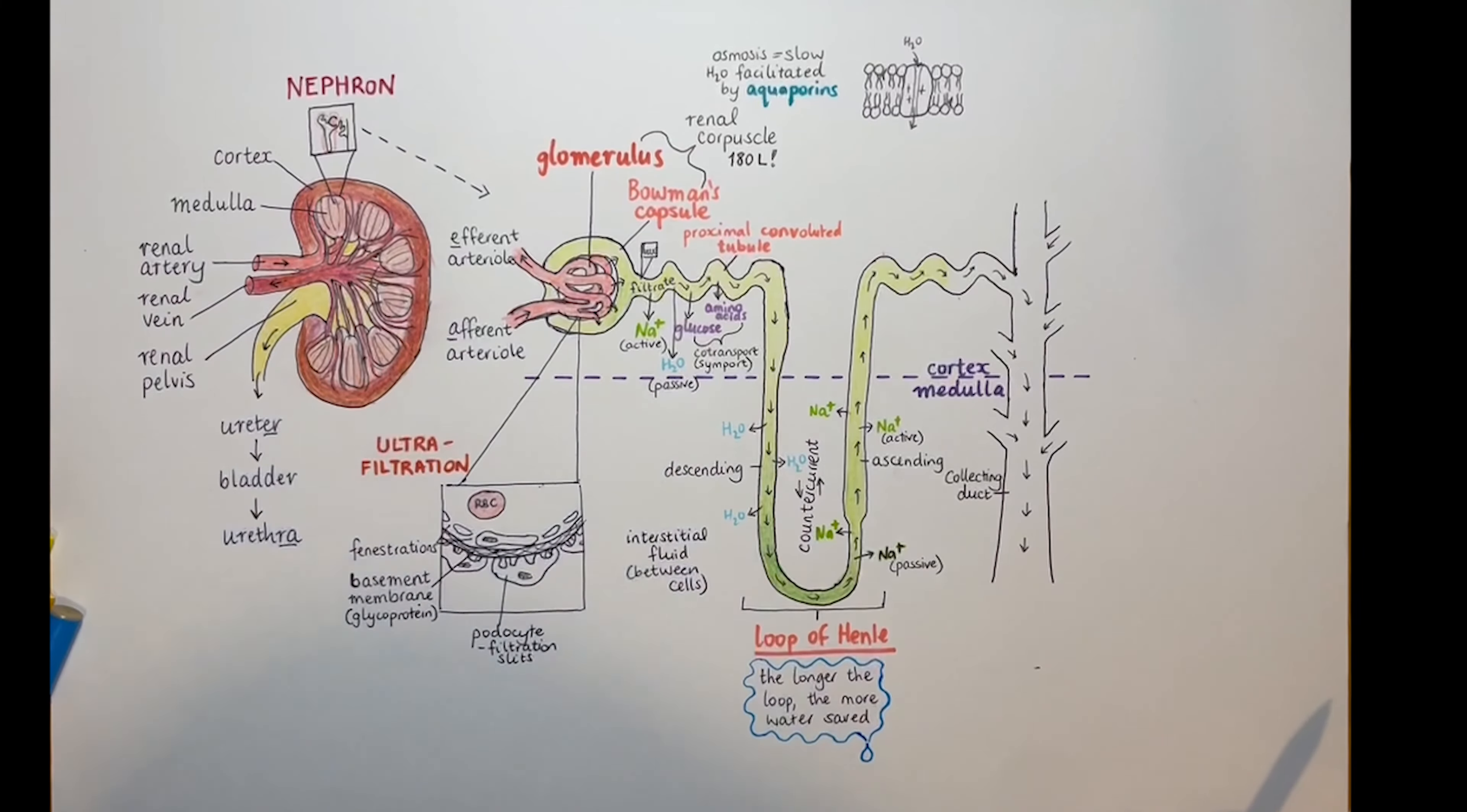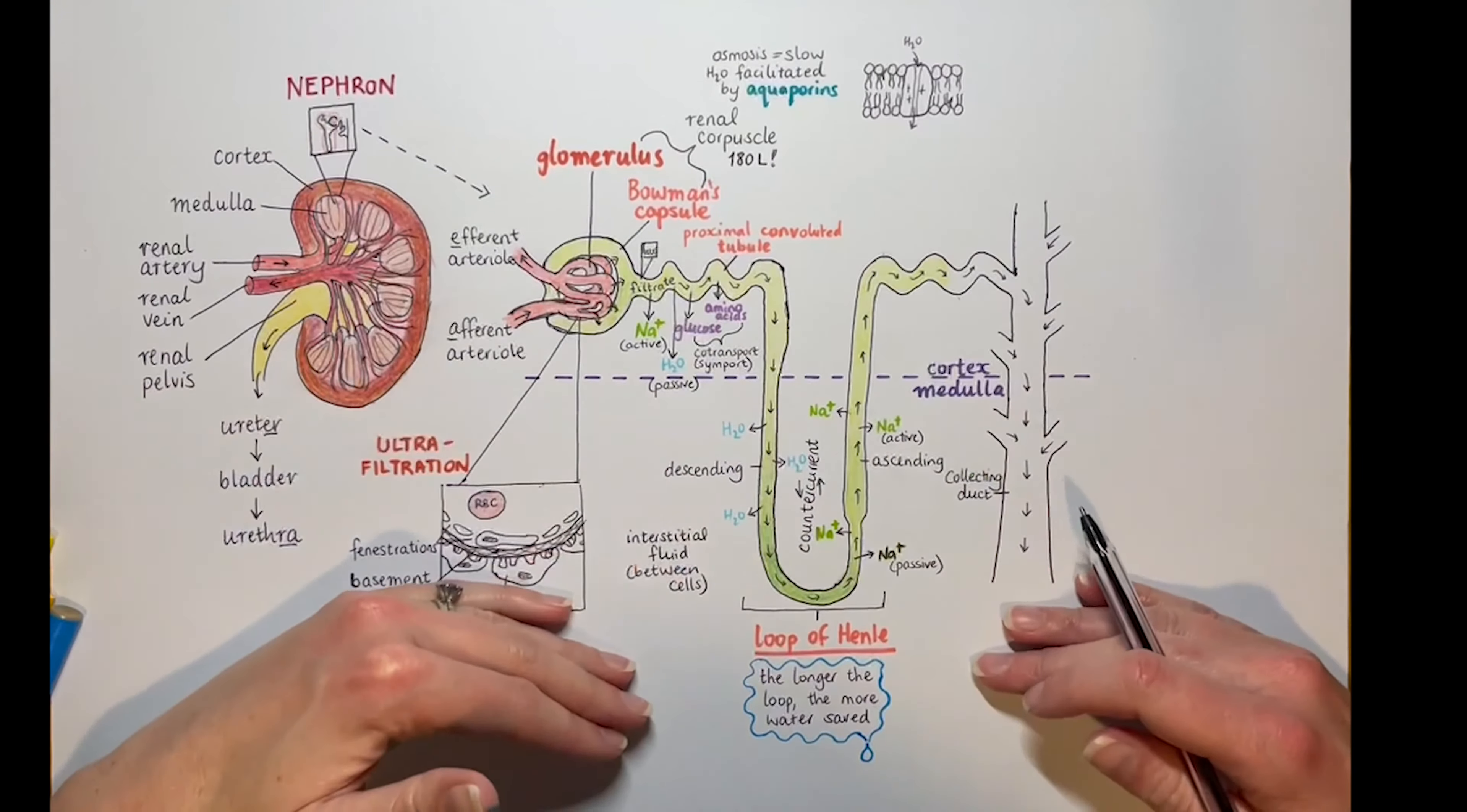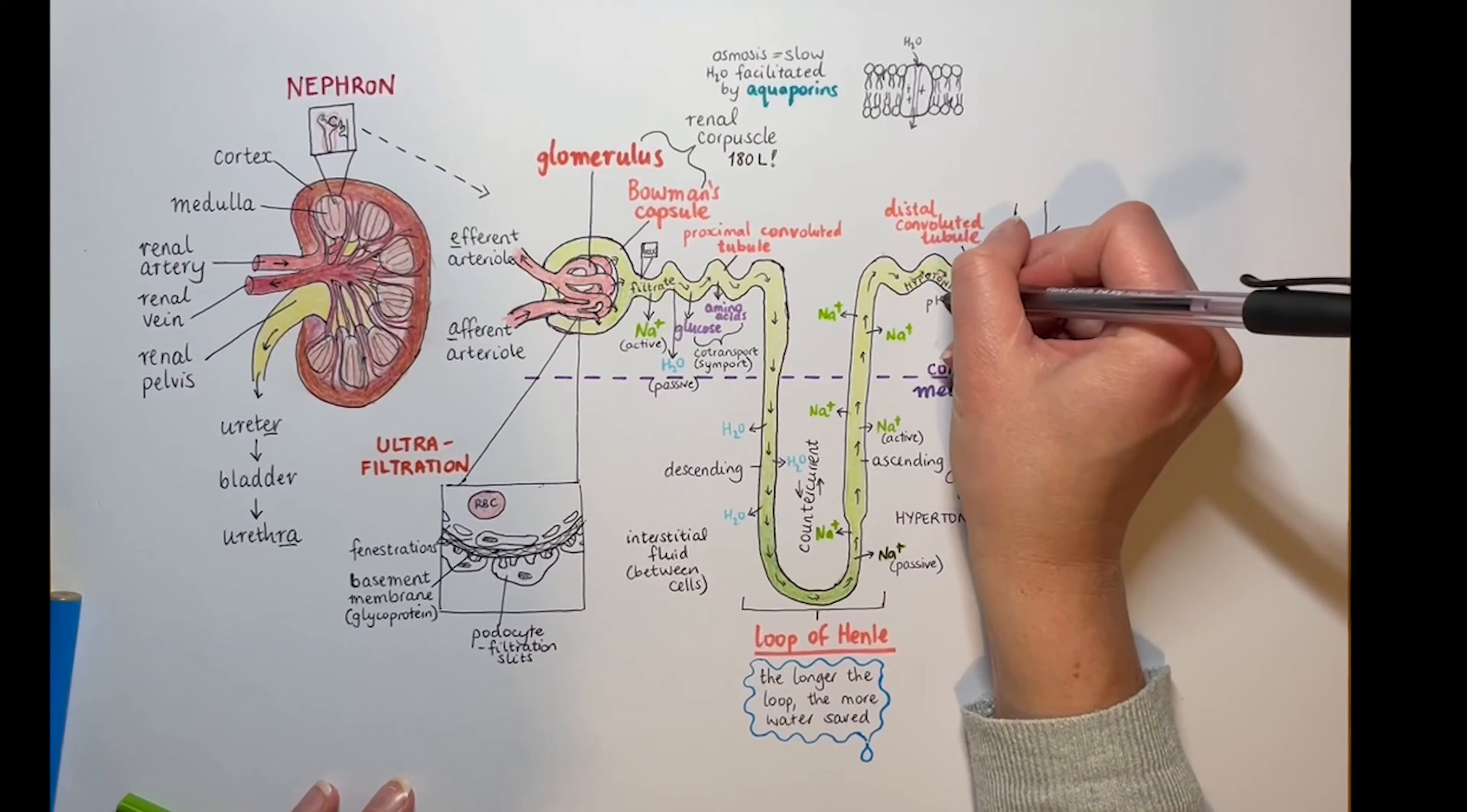After the loop of Henle, we've made the interstitial fluid of the medulla quite hypertonic, or above-average saltiness. The distal convoluted tubule, on the other hand, has fluid that is hypotonic—hypo for low. And at this point, we've done that because we've just pumped out lots of salt, so this has become quite watery.